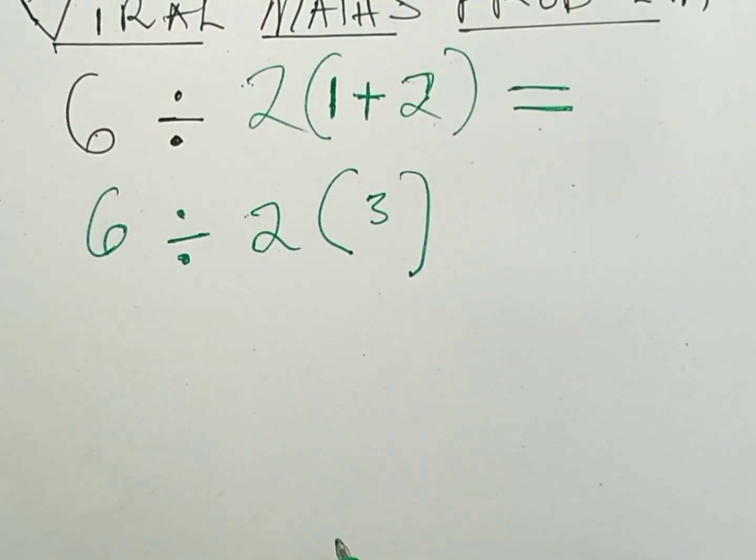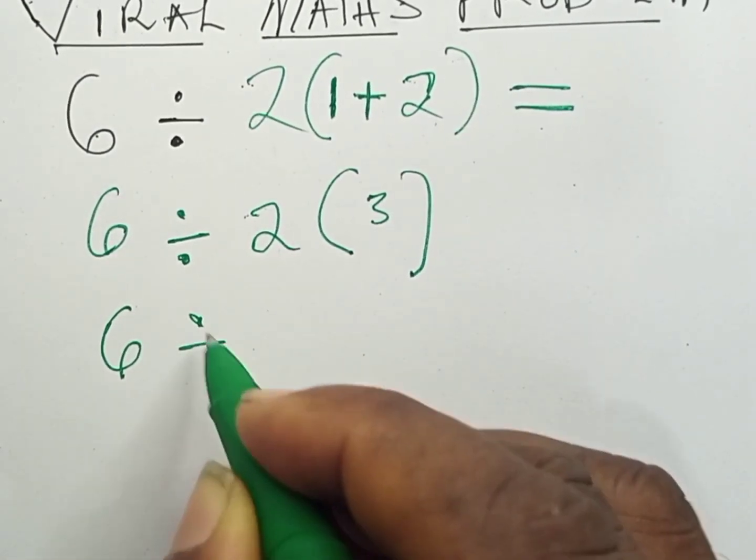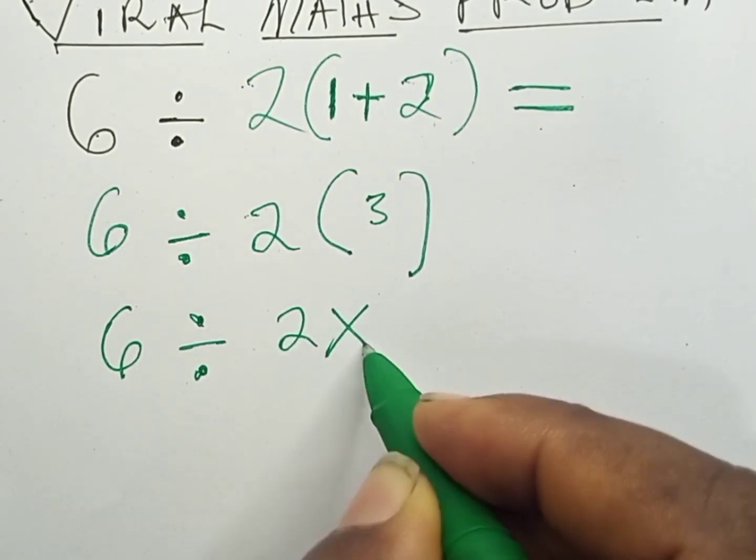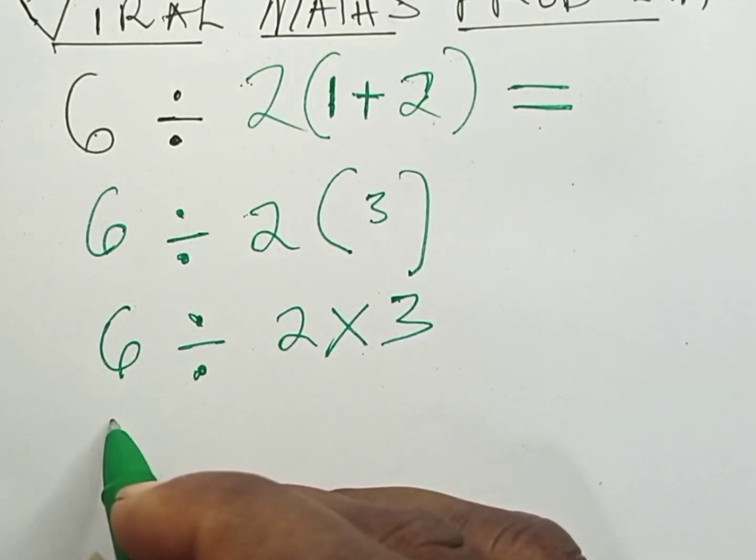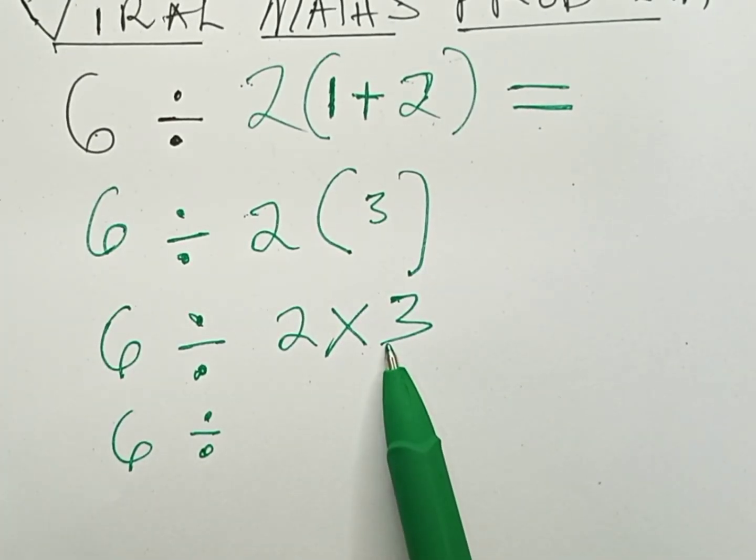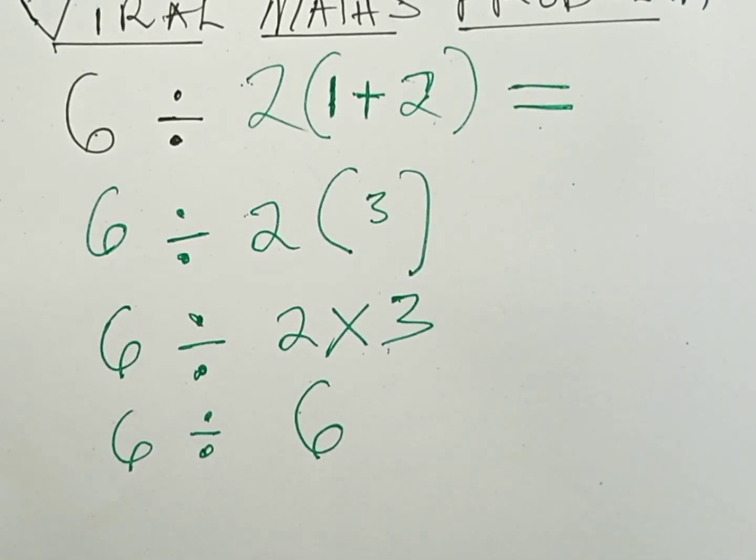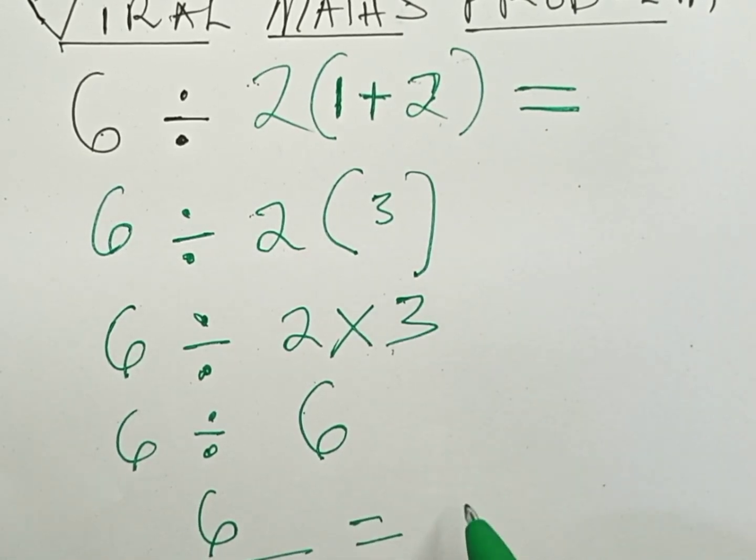So this result can be written as 6 divided by 2 times 3, which is 6 divided by 6, and the answer equals 1.